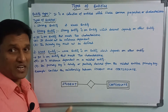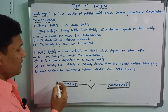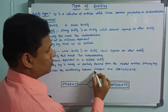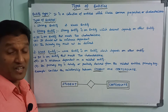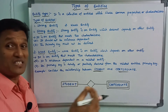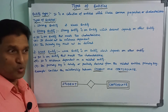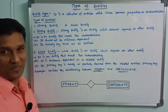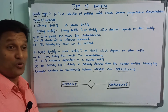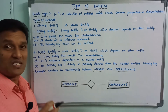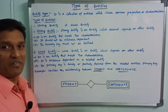A weak entity is an entity which depends on another entity — it compulsorily depends on another entity. Consider the relationship between student and certificate. Student is a strong entity because certificate depends on the student. Certificate depends on the student, so certificate is a weak entity and student is a strong entity.